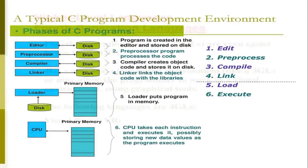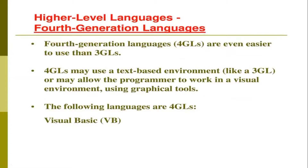Now we come to the fourth generation of programming languages. Fourth generation languages are even easier to use than the third generation. Just like when a software like WhatsApp gets a new version to make it easier for the user, when changes were made to high-level languages they made them easier for developers. Fourth generation languages may use a text-based environment — like we have seen with browser-based coding, using text-based language in a text editor.